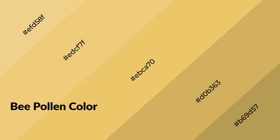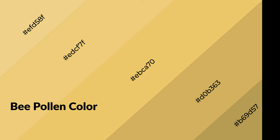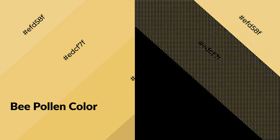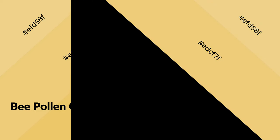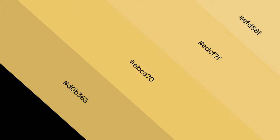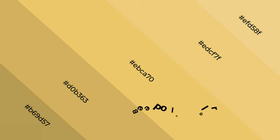Bee pollen is a warm color and it emits cozier and active emotions. Warm colors are symbols of warmth, fire, heat, and sunshine. It also evokes joy, passion, love, and even anger. You can see warm colors used in restaurants and gyms.